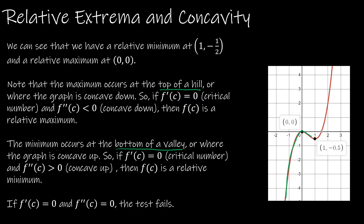At the top of a hill, that graph is going to be concave down, whereas at the bottom of a valley, that graph is going to be concave up. So the second derivative test uses this fact: if f'(c) = 0, that means we have a critical number, and if f''(c) < 0 — concave down — then this is going to be a maximum. If you have a critical value where the graph is concave up, then you have a minimum.